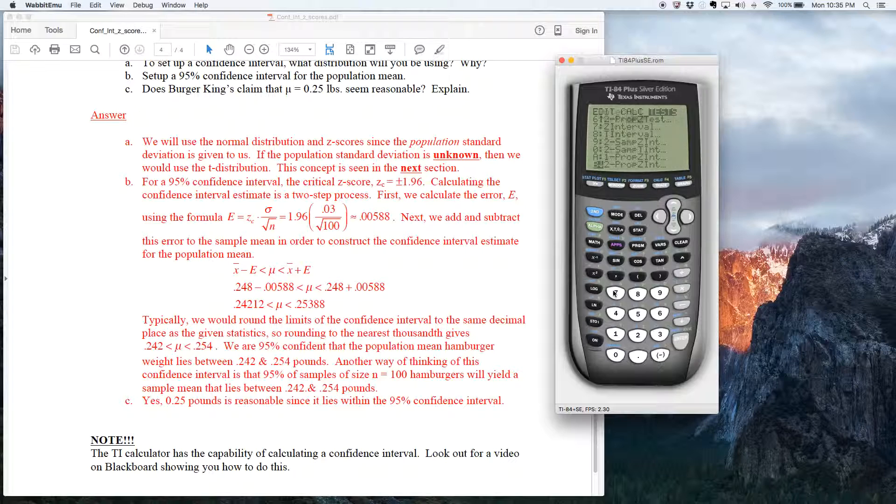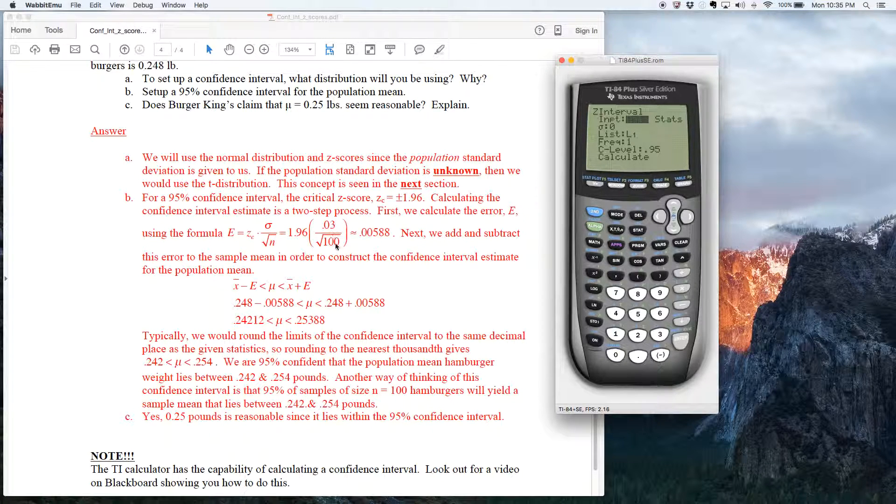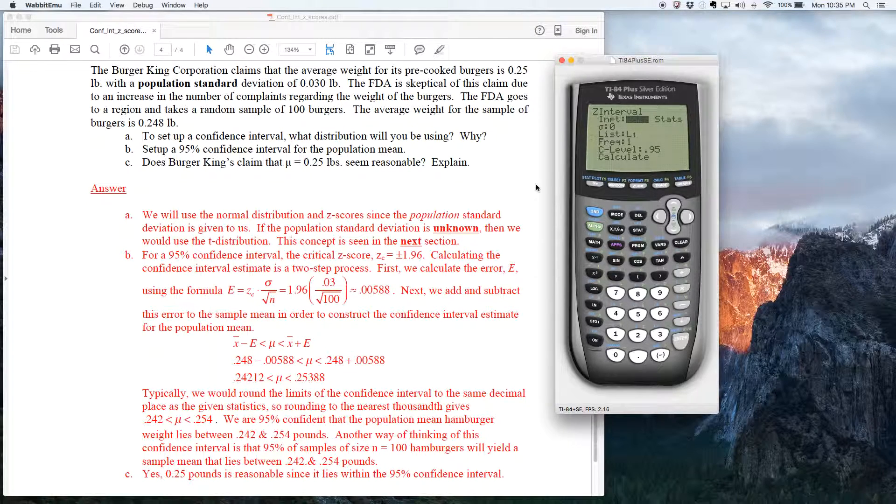So if you choose option seven here, it's pretty straightforward. Input information, you have to give the, it asks you what do you give me? It says input data or stats. Well, we don't have the raw data. In other words, we don't have the weights of the 100 hamburgers. We have the summarize statistics. So I'm going to scroll this thing over, use my arrows and you got to hit enter and notice how the inputs change. So now it just prompts you and says what do you got for me? And you just put the stuff in.